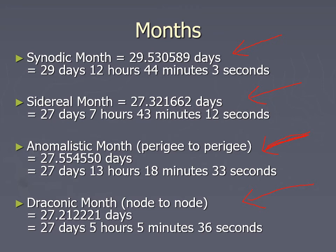That turns out to be important because if you're crossing the ecliptic, that's when you can possibly get a solar eclipse — if you have the right phase of the moon. It would have to be when the moon is between the Earth and the sun. So what phase is that? That's going to be the new moon. If a new moon occurs when the moon is on the ecliptic, you could get a solar eclipse.